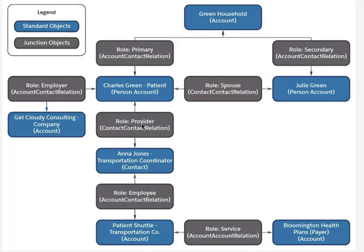If you go down, you have an Energon transportation coordinator contact. It is a contact — not a person account. The Energists provide transportation for the patient. It has a junction object contact relationship. Below that, you have a Shuttle Transport Company account, which has an account contact relationship.